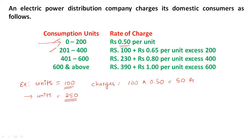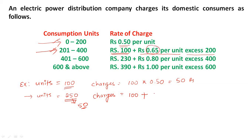Suppose units is equal to 250. Then we calculate the bill. 250 is in the second range, so charges equal 100 plus 0.65 per unit excess over 200. That is 100 plus 50 units into 0.65, which gives us 132 rupees 50 paisa.